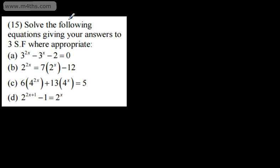In question A, we've got 3 to the power of 2x minus 3 to the power of x minus 2 is equal to 0. We could factor this straight away, or alternatively, we can use a substitution. I'm going to rewrite this so it looks like a quadratic equation. If we've got 3 to the 2x, we could write that as 3 to the x raised to the power of 2, using the rule that A to the power of m raised to the power of n is A to the power of m multiplied by n.